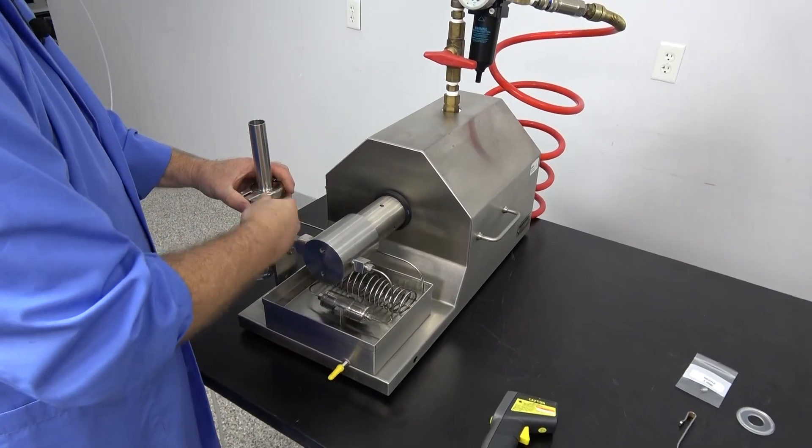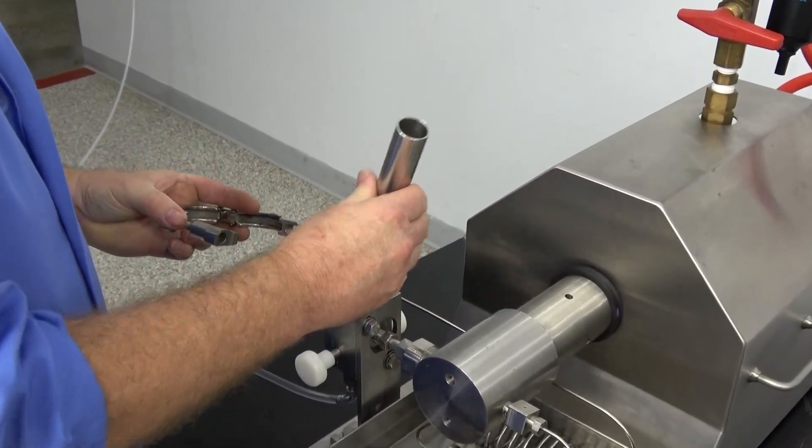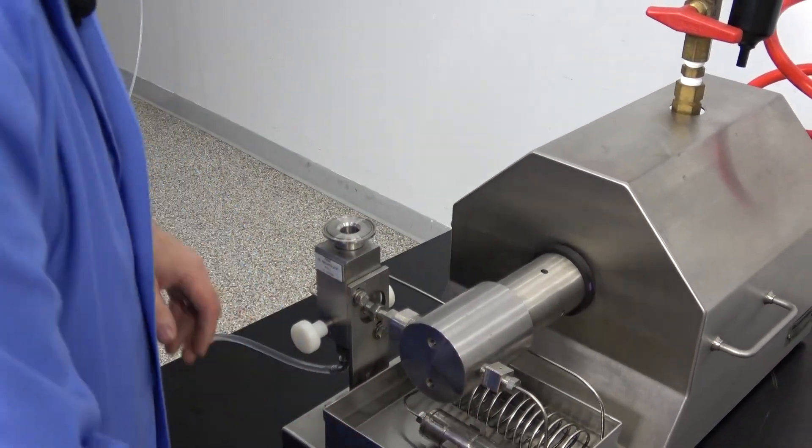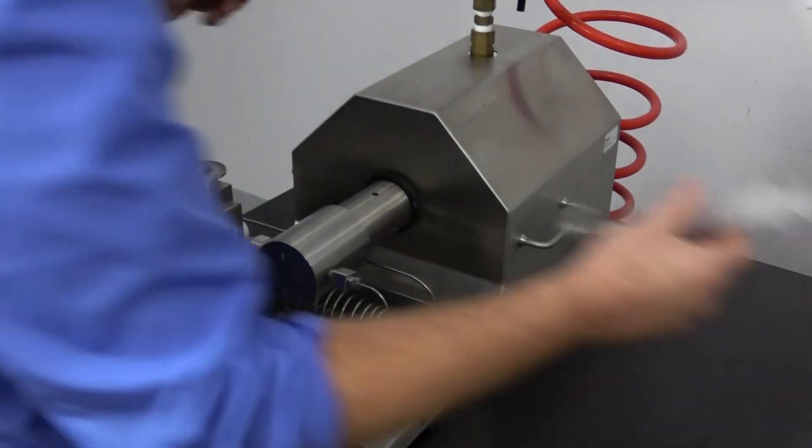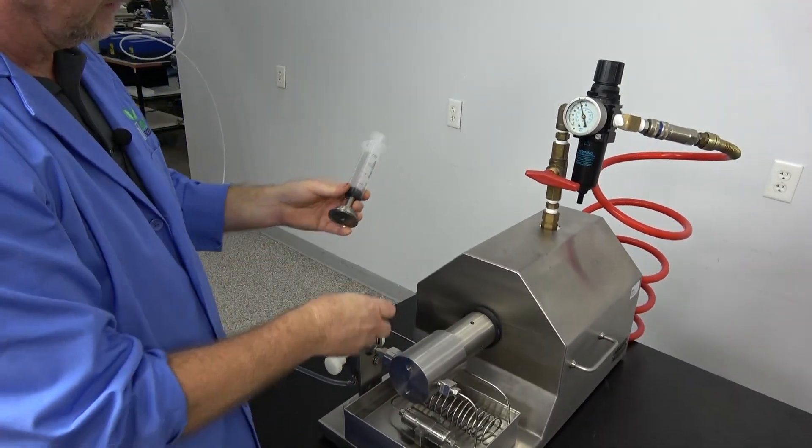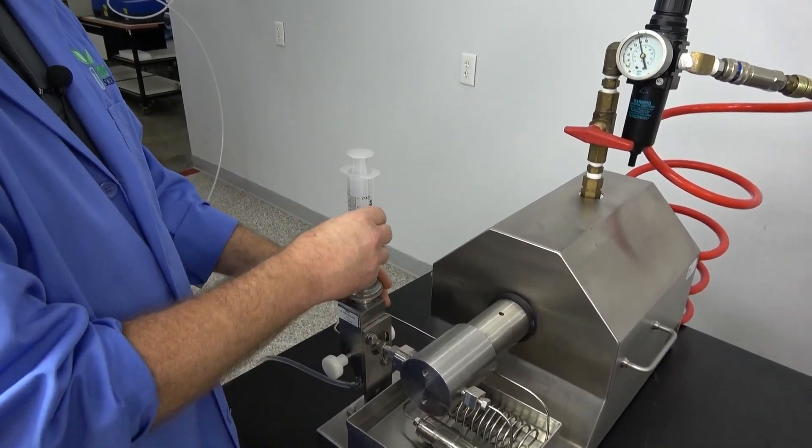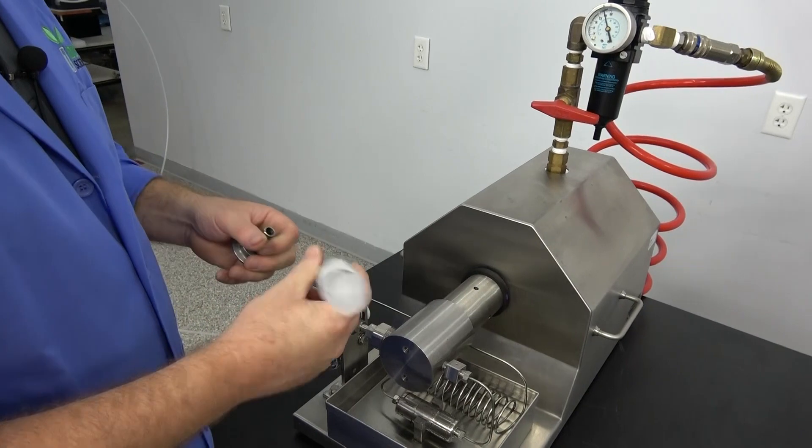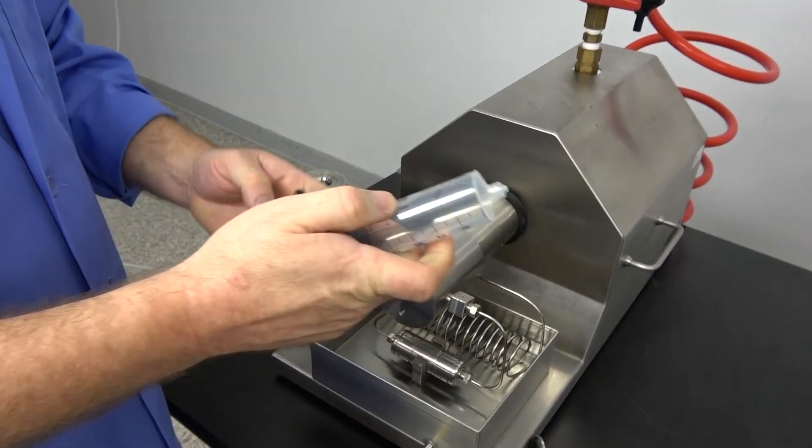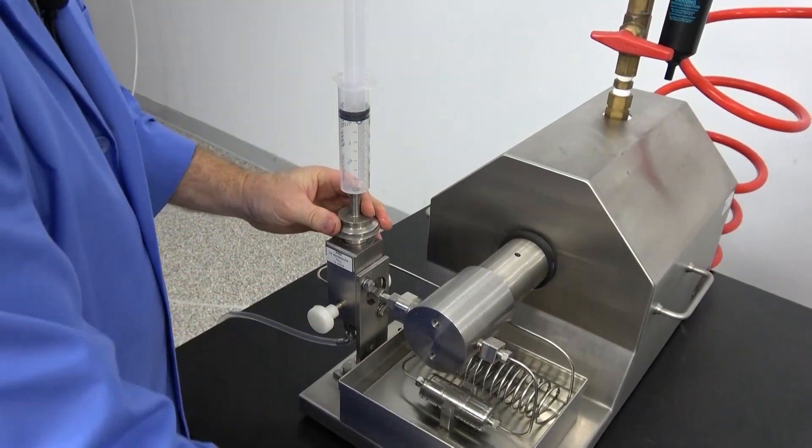So right now I've drained this reservoir here. And they actually sell different reservoirs for different sizes and different things. But what I've done is I've just got a syringe here that I've plugged into a fitting that will just fit right on here. And so what I do is I just pull some of my fluids into the syringe. And I plug it in and then clamp it on here.